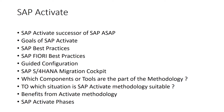The successor to ASAP is SAP Activate, which was first introduced with SAP S/4HANA, designed for both on-premise implementations and cloud solutions. SAP Activate is not only the successor to ASAP but also to SAP Launch, which had been used for SAP cloud solutions such as SAP Ariba. In addition to best practices and methodology, SAP Activate also offers guided configuration, taking simplification and standardization a step further, while also allowing non-standard processes.